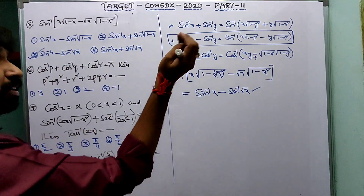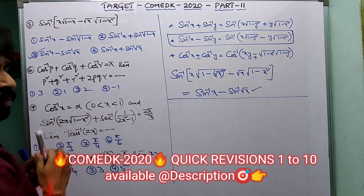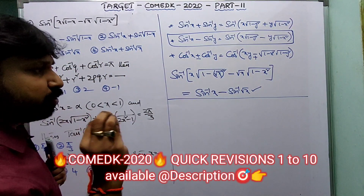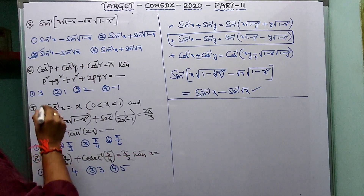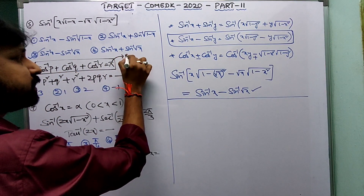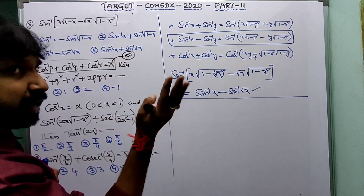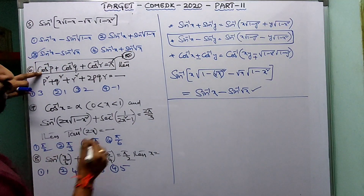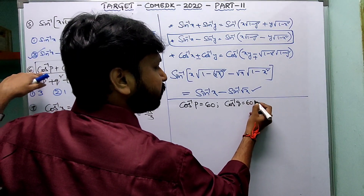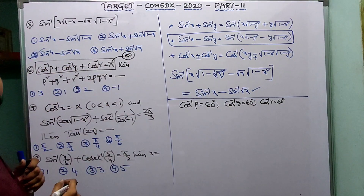Question: cos⁻¹p + cos⁻¹q + cos⁻¹r = π. Find the expression p²+q²+r²+2pqr. Shortcut: π = 180°, divided equally into three parts gives 60° each. So cos⁻¹p = cos⁻¹q = cos⁻¹r = 60°, meaning p = q = r = cos60° = 1/2.